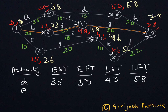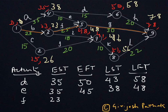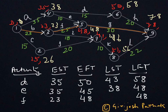For activity E: it also starts at node 4 so the Earliest Start Time is 35. Adding the activity time of 10 days gives an Earliest Finish Time of 45. The Latest Finish Time from the ending node is 48, and 48 minus 10 gives a Latest Start Time of 38. For activity F: it starts at node 3 with earliest time 23, so Earliest Start Time is 23. Adding 25 days gives Earliest Finish Time of 48. The Latest Finish Time is also 48, and 48 minus 25 gives Latest Start Time of 23.